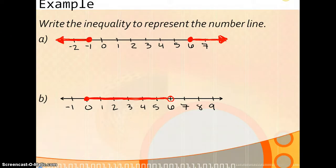The example says write the inequality to represent the number line. So A has two different graphs, and you just need to start by picking a variable. It doesn't really matter what variable you pick, so we'll go ahead and pick X.